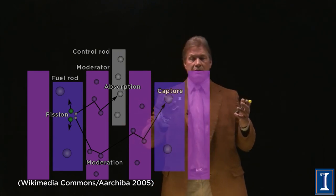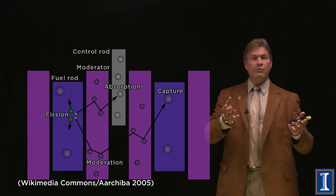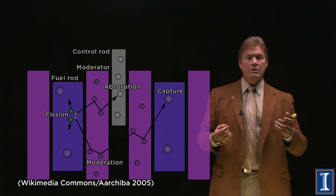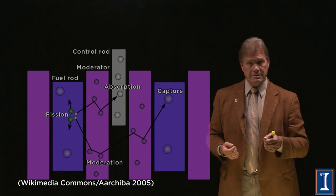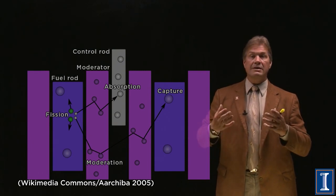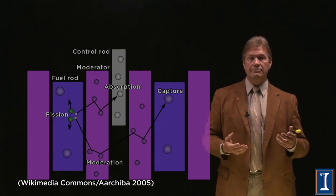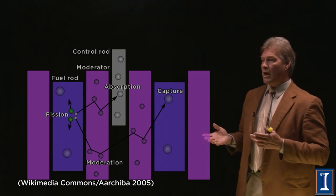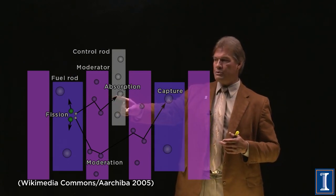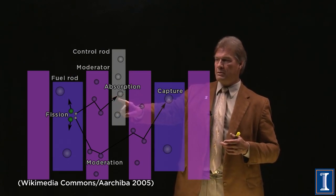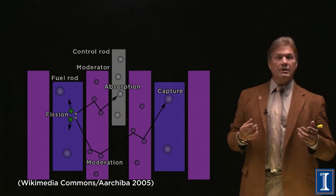Now, you might wonder what you do to make the thing speed up or slow down. You've got to interfere with the neutron dance — you've got to take some of the neutrons out of the picture. So a control rod, pictured here, absorbs neutrons.